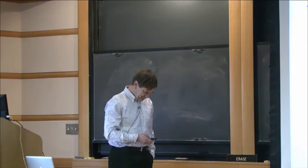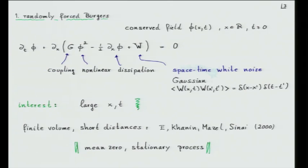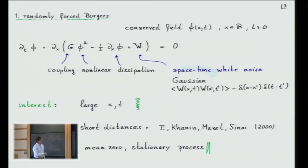Here is my scalar field and here's the conservation law. It contains a nonlinear term. The capital letters are simply numbers — the coupling constants. There's a particular reason why I don't want to put them equal to one because later they will play a role. Here I keep the capital G, then there's the diffusive term, and this one is the white noise, normalized with standard strength one.